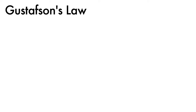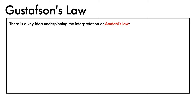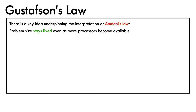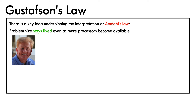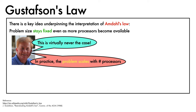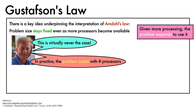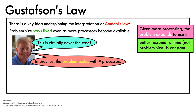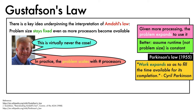There is a key idea that underpins the interpretation of Amdahl's law: that the problem size will stay fixed even as more processors become available. However, as noted by John Gustafson in 1988, this is virtually never the case. What happens in practice is that the problem scales with the number of processors — given more processing, the problem expands to use it. It may be better to assume that runtime, not problem size, is constant. This perspective links to Parkinson's law, where Cyril Parkinson noted in 1955 that work tends to expand so as to fill the time available for its completion.